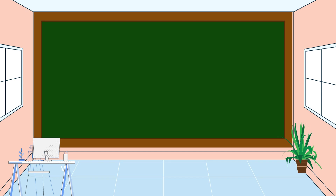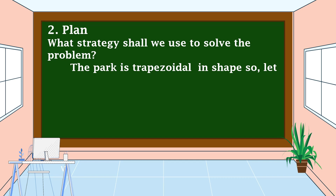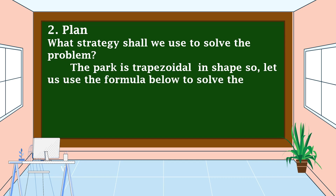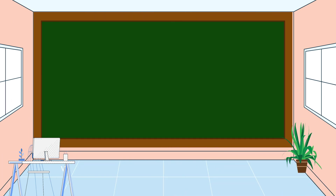The next step is we're going to make a plan. What strategy shall we use to solve the problem? Since the park is trapezoidal in shape, let us use the formula: Area is equal to base 1 plus base 2, divided by 2, times height.